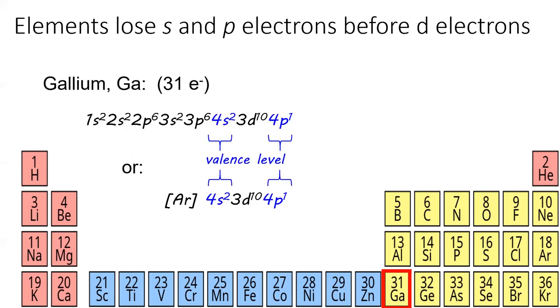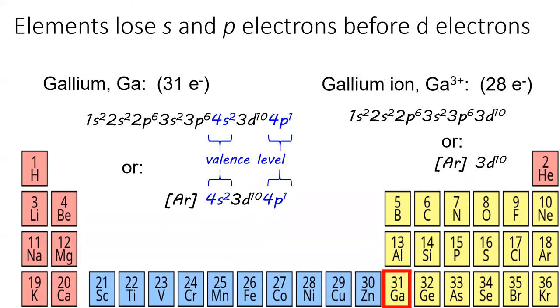Take gallium, for example. Neutral gallium has 31 electrons with the condensed electron configuration of argon, 4s2, 3d10, 4p1. I've highlighted its valence electrons in blue. Note that we do not consider the d electrons to be valence electrons. Gallium forms 3 plus ions by losing its outermost s and p electrons. It does not lose its d-shell electrons, which gives gallium the condensed electron configuration argon, 3d10.